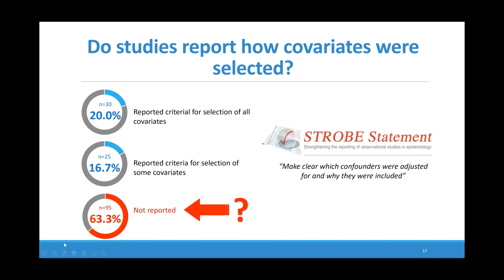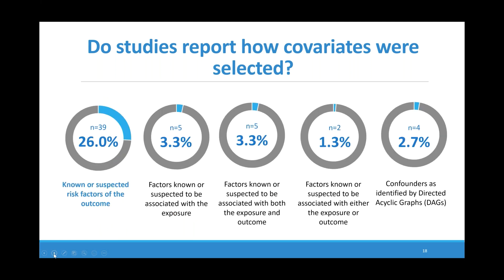We found that two-thirds of studies didn't report the criteria or methods for selecting covariates, despite the STROBE checklist — which most of these studies claim to be following — including a statement on reporting which confounders were adjusted for and why. Among the minority that did report how covariates were selected, most reported selecting known or suspected risk factors of the outcome. A smaller proportion reported selecting factors suspected to be associated with the exposure, factors associated with both the exposure and the outcome, or factors associated with either the exposure or the outcome.